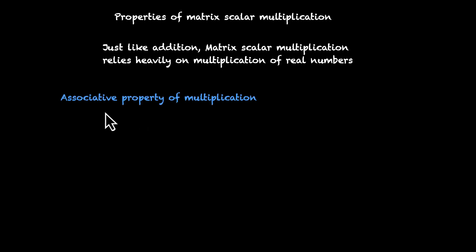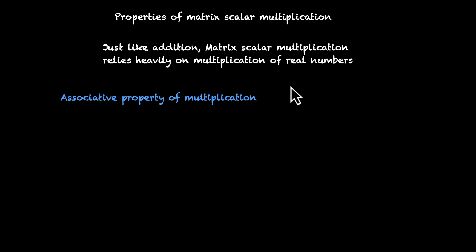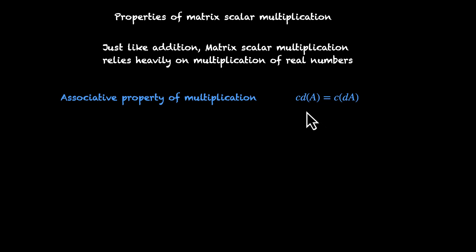The first one is the associative property of multiplication. In real numbers, if you have three numbers being multiplied, you can multiply them in any order. The same works for matrix scalar multiplication. If you have two numbers and a matrix, you can multiply them in any order. You can multiply the numbers and then multiply that with the matrix, or you can pick one of these numbers, multiply it with the matrix — here we have DA — and then multiply C with this product. You get the same thing.